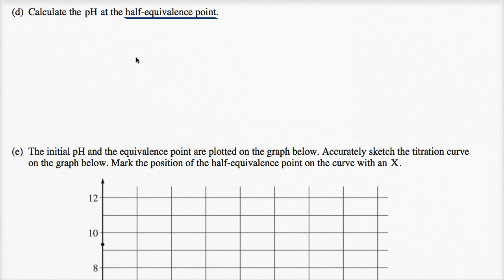Now the half equivalence point is the point at which half of the potassium sorbate has been converted to the sorbic acid. Or another way of thinking about it is the concentrations of the potassium sorbate and the sorbic acid are equivalent.